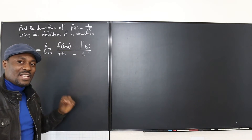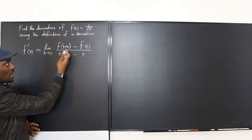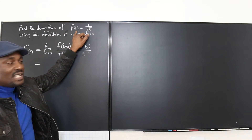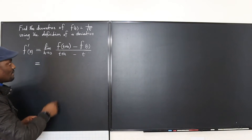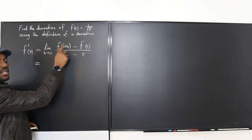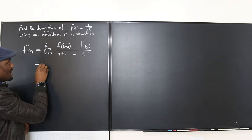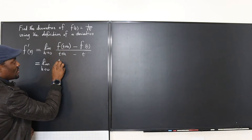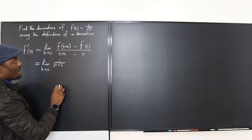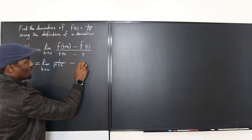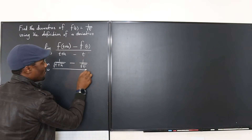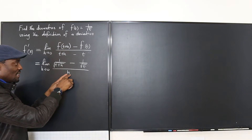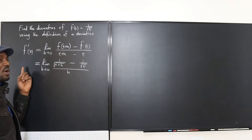The algebra that's involved in this is what you need to pay attention to. The function we're using today is f(t) = 1 over square root of t. So if you give this function t plus h, it gives you 1 over square root of t plus h. So this is the limit as h goes to zero of: 1 over square root of t plus h, minus 1 over square root of t, all over h. As h goes to zero, whatever we get on this side is our derivative.